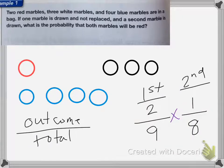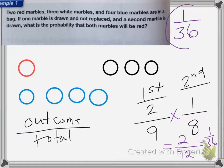I end up with 2 over 9 times 8, which is 72, which is equal to 1/36. So the probability of pulling a red marble 2 times is 1/36.